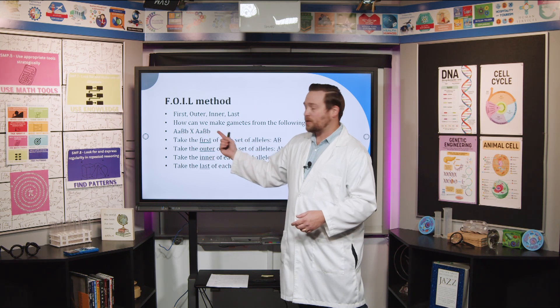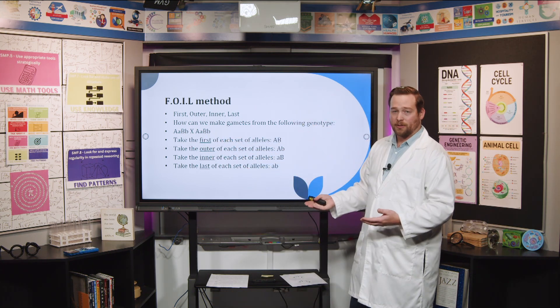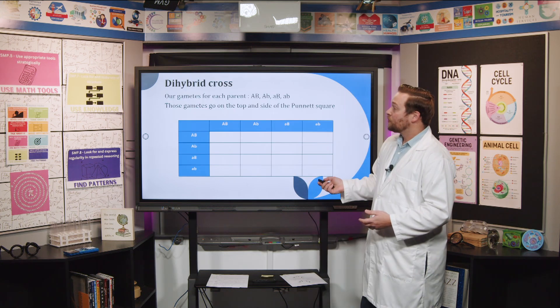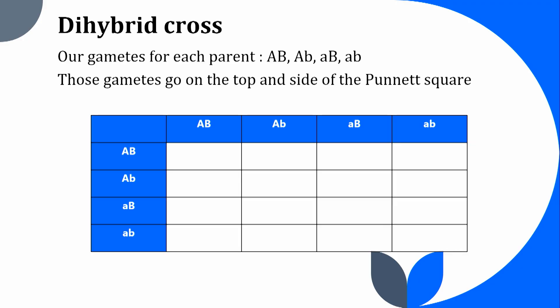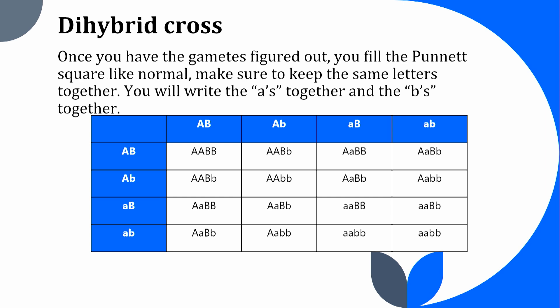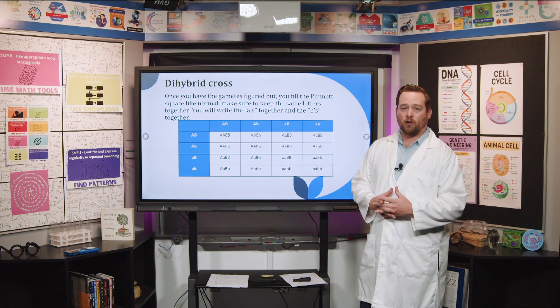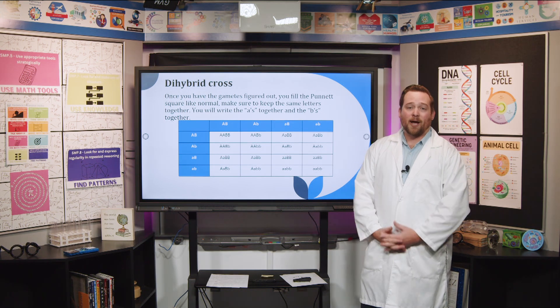The other parent has the same genotype, so they generate the same four gametes. These are the gametes for each parent — the father's along one side and the mother's along the other. Now you fill in the Punnett square, making sure to keep the same letters together: keep the A's together and the B's together. I know that might have been a little confusing, but we're going to practice this next time. Thank you all so much for following along today. Your teacher has some practice work for you, so give it your best effort, and I hope everybody has a great day.